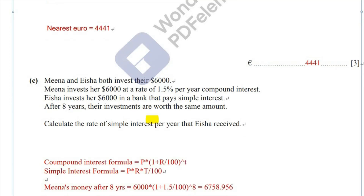Since we have everything to calculate — the initial value, the rate, the time, and the formula — let's calculate Meena's money after eight years. That will be 6,000 multiplied by (1 + 1.5/100) to the power of 8. After eight years, the final amount in Meena's account will be 6,758.956. I recommend keeping this to many decimal places since this is not the final answer.